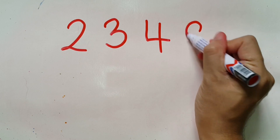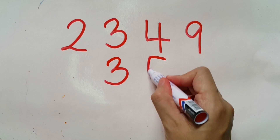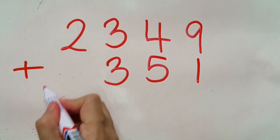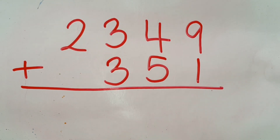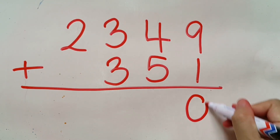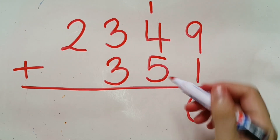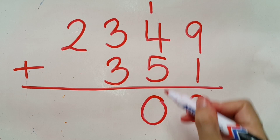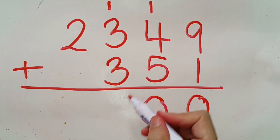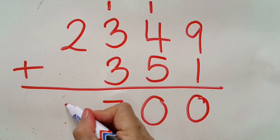Start with 2349 plus 351. Nine plus one equals ten, so zero goes at the bottom and one is carried to the top. One plus four plus five will be ten as well, so zero at the bottom and carry one to the left. One plus three plus three is seven.